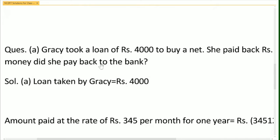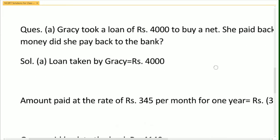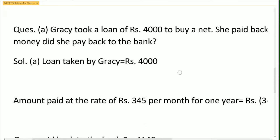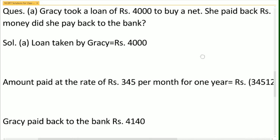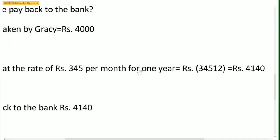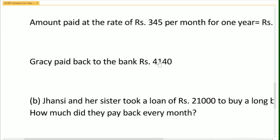Gracie took a loan of Rs.4,000 to buy a net. She paid back Rs.345 every month. How much did she pay back to the bank in one year? Amount paid at the rate of Rs.345 per month for one year: 345 × 12 equals Rs.4,140. So Gracie paid back Rs.4,140 to the bank.